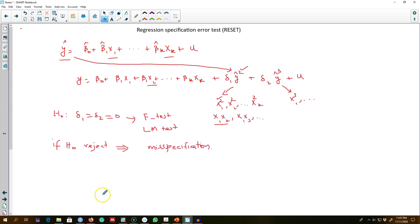By rejecting H0, we know that there is misspecification in our model, but it does not guide us on the origin of this misspecification and how to proceed with it.